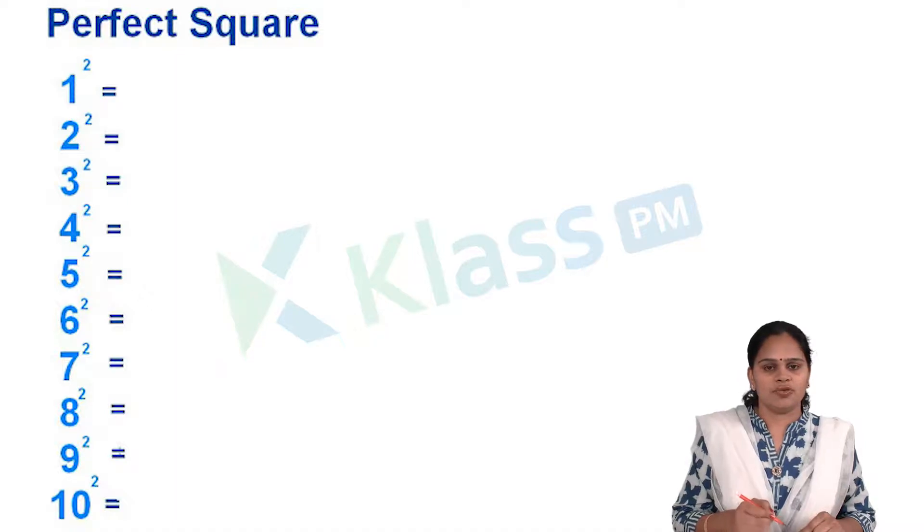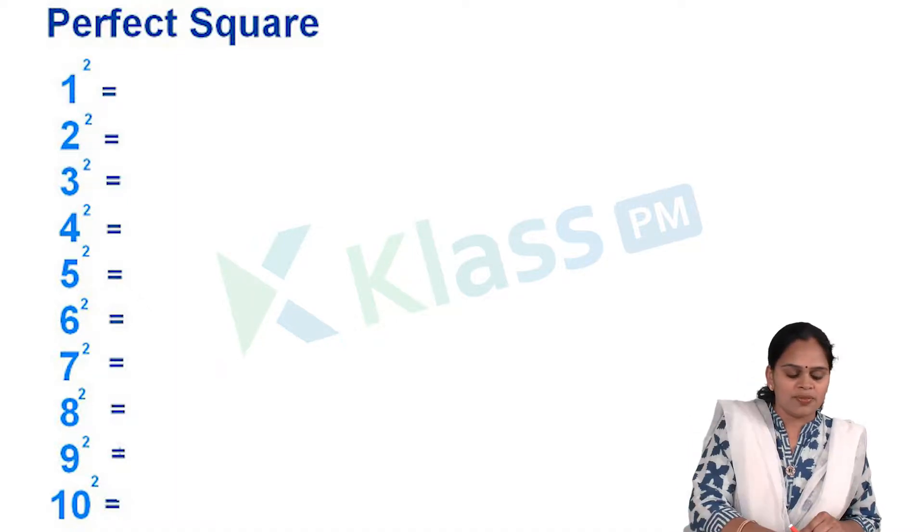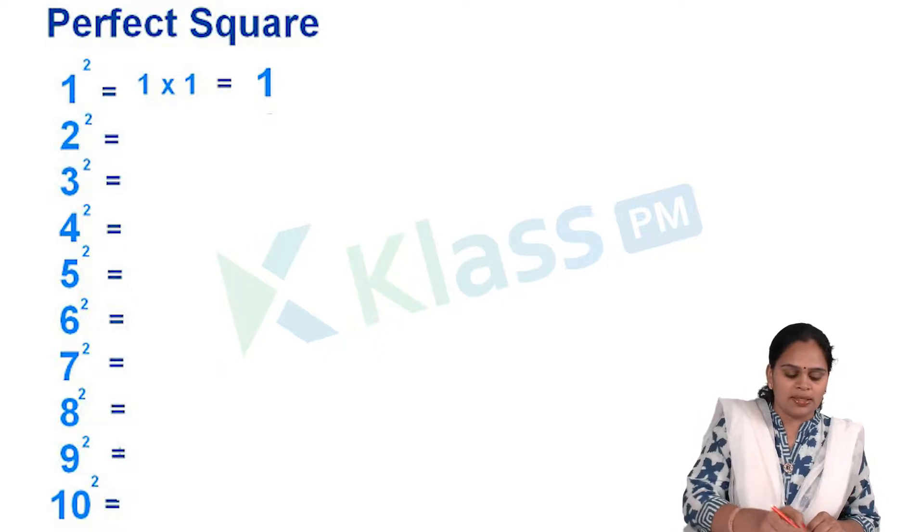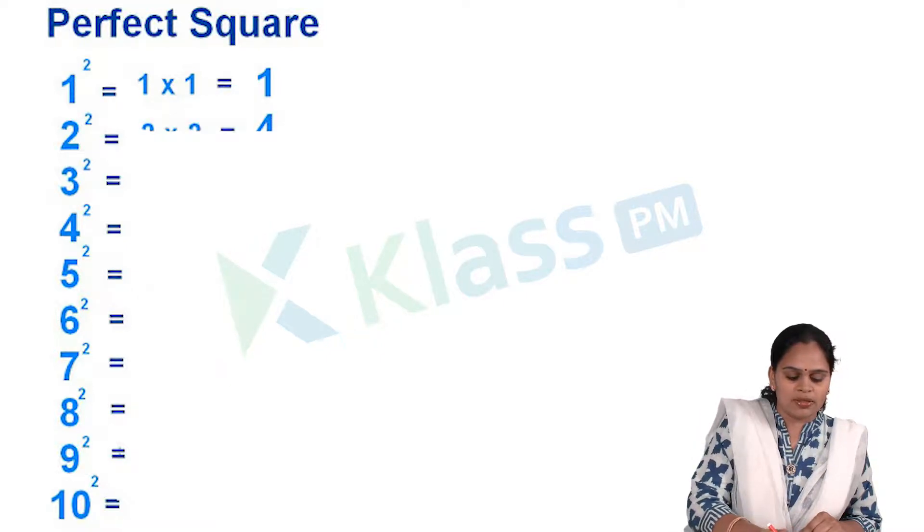This is very easy to find the squares for these numbers because these are single digit numbers we can easily find the squares. Say about 1 square, that is 1 into 1, nothing but 1. For 2 square, 2 into 2, it's 4.